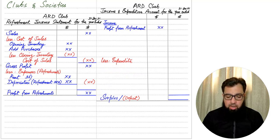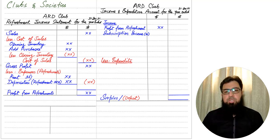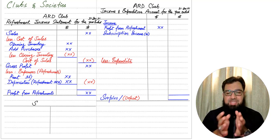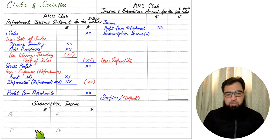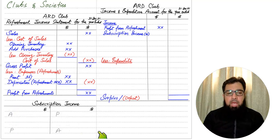Next, we have subscription income. Subscription is a term you may already be familiar with from websites or magazines. Here, it refers to the fee members pay to be part of the club so the club can maintain its facilities. Since this is income for the club, we make an income account using the mnemonic APA — while for an expense account we use the mnemonic PAAP.